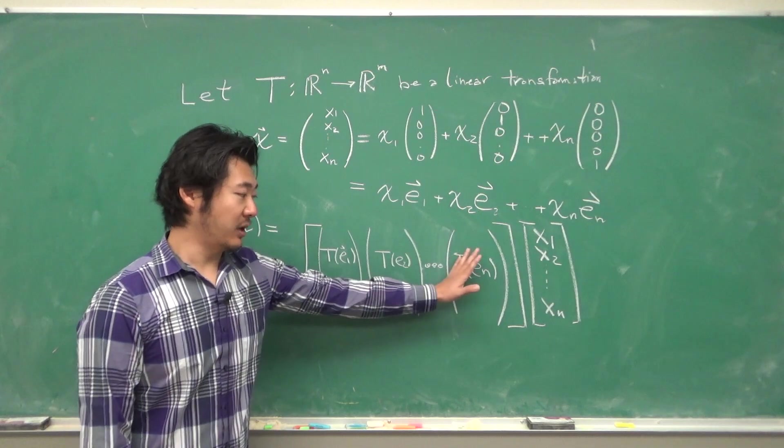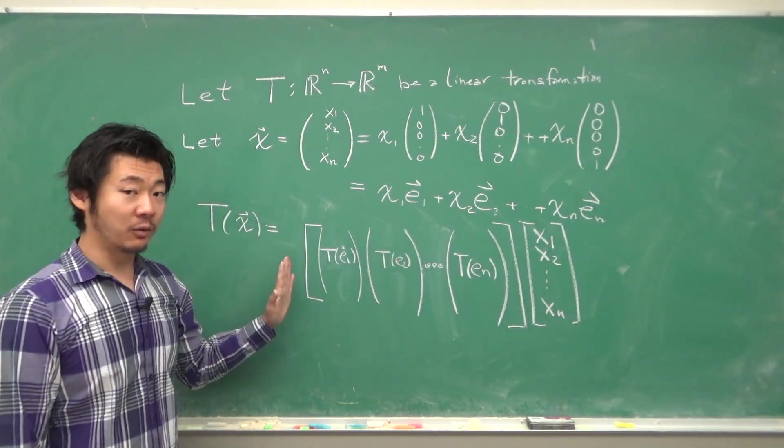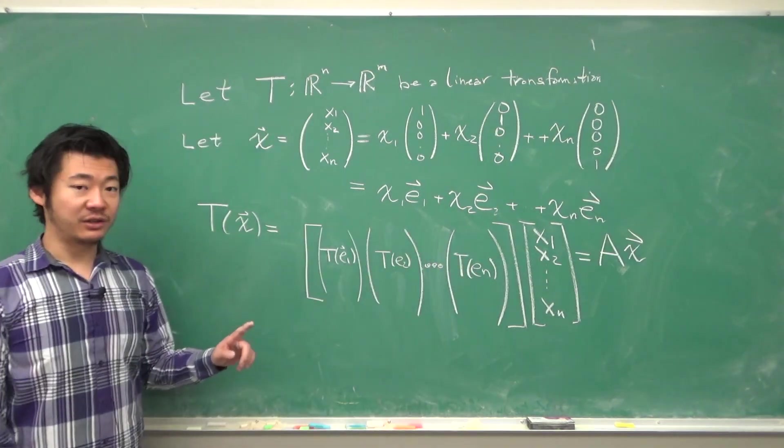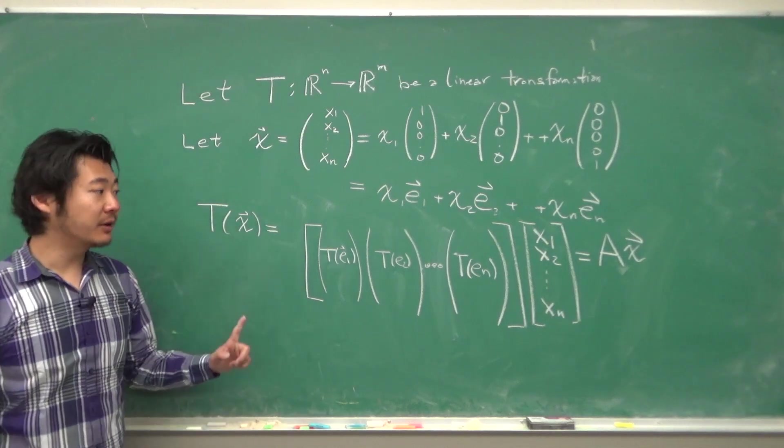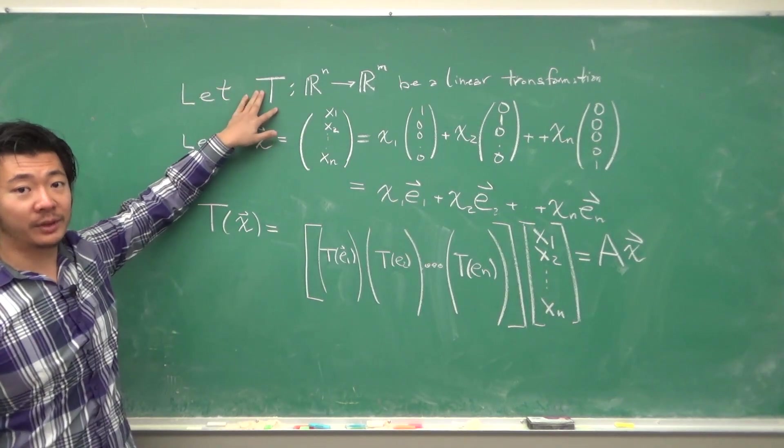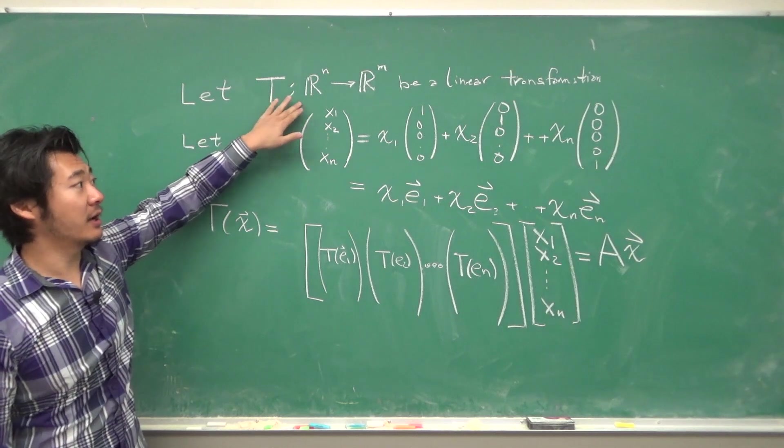So if we let this whole matrix be A, then we can rewrite this as a matrix multiplication. Now, notice that we assume nothing about T except that it's a linear transformation from Rⁿ to Rᵐ.